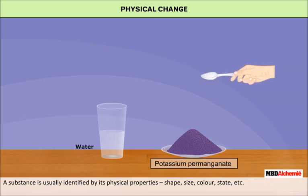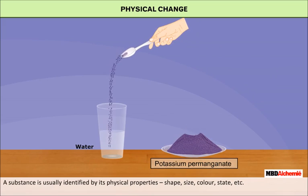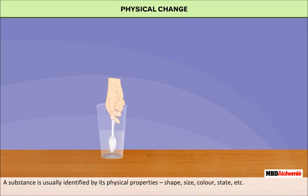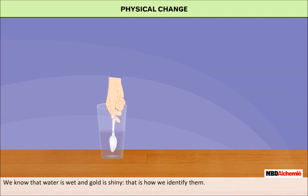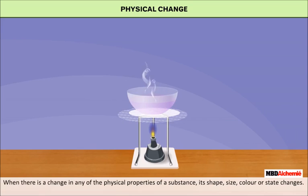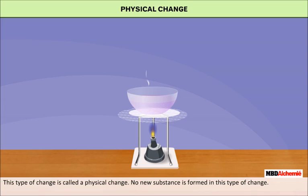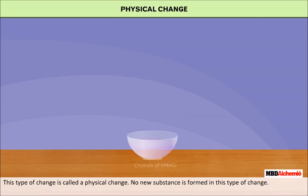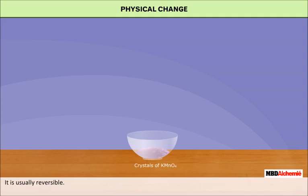A substance is usually identified by its physical properties — its shape, size, color, and state. We know that water is wet and gold is shiny; that is how we identify them. When there is a change in any of these physical properties, this type of change is called a physical change. No new substance is formed in this type of change, and it is usually reversible.